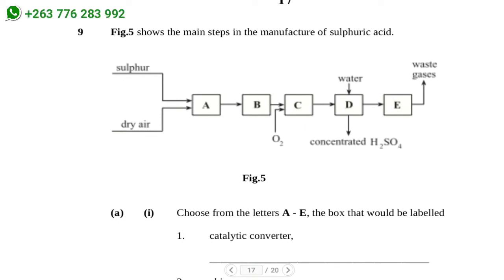Welcome guys, we are looking at question number nine from the first specimen paper of A-level chemistry. The question reads: Figure 5 shows the main steps in the manufacture of sulfuric acid. There are five steps labeled A through E.